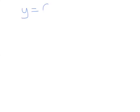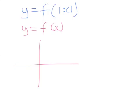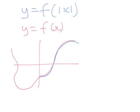To generalise for the graph y equals f(mod x): supposing y equals f(x) looks a certain way, then the graph of y equals f(mod x) is — for positive values of x it's the same, but for negative values of x it's a reflection in the y-axis. What I'm trying to show is that the left part is a reflection of the right part.